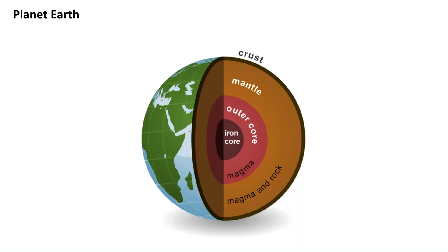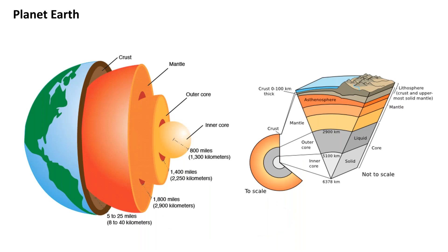To understand geothermal energy, you need to understand how the earth is put together. We have a crust, a mantle, an outer core, and an inner iron core. At each level, the conditions, temperatures, and energy content are considerably different. In general, the earth's crust can range anywhere between 5 to 25 miles deep before you get to what is referred to as the mantle. To get through the mantle, you would need to travel about 1,800 miles — about the equivalent of going from Florida to California straight down.